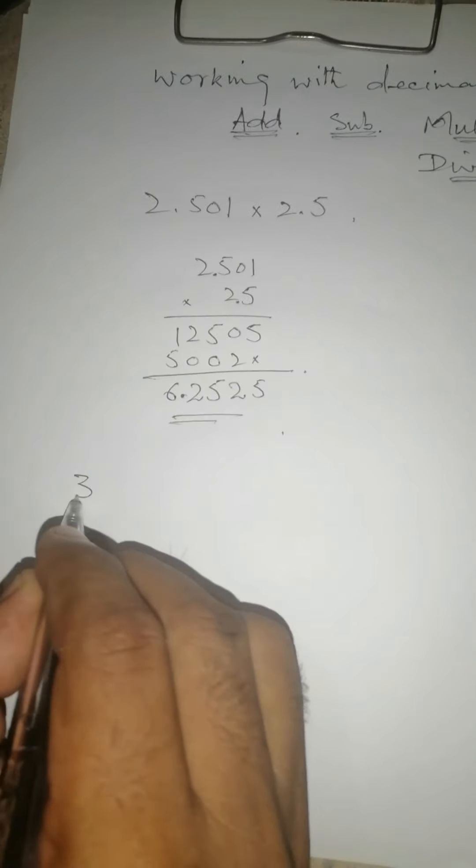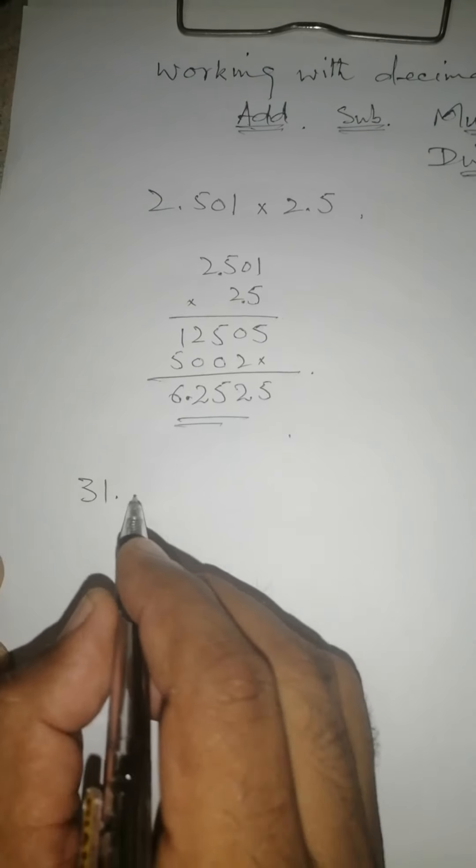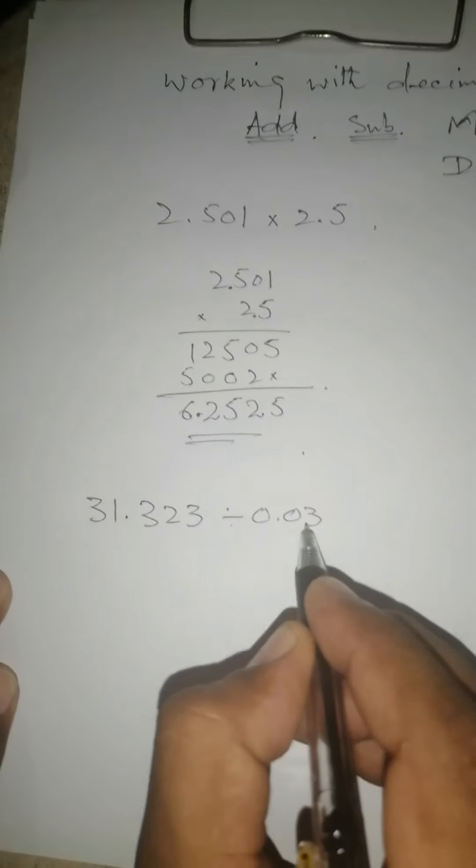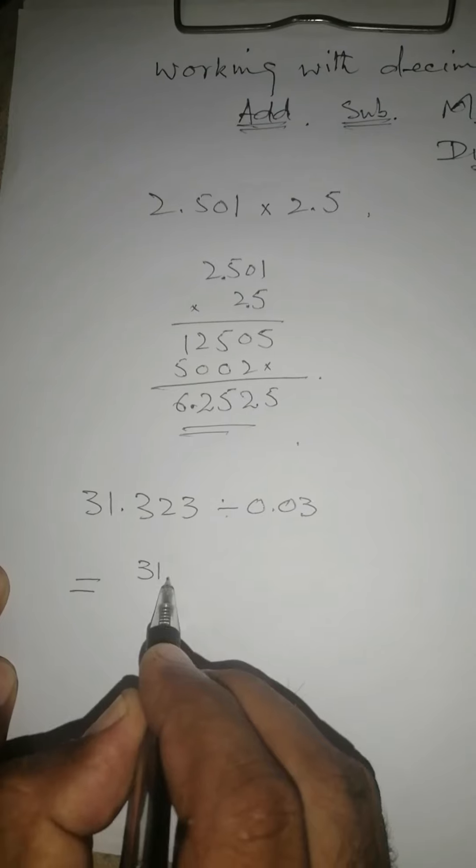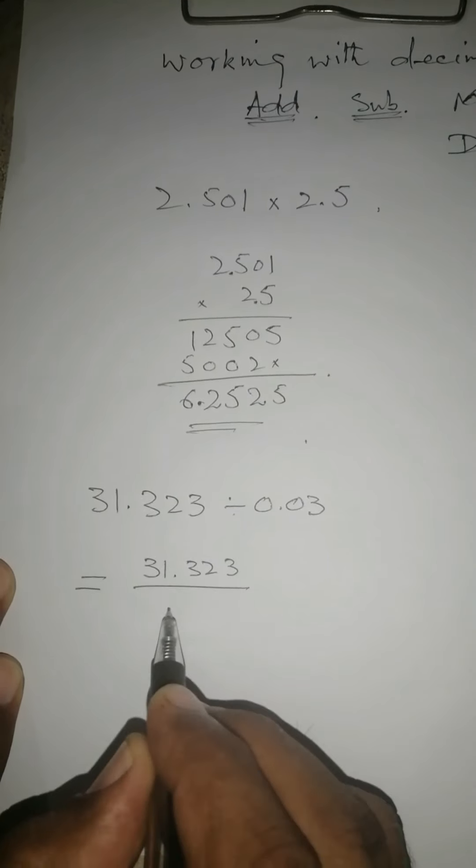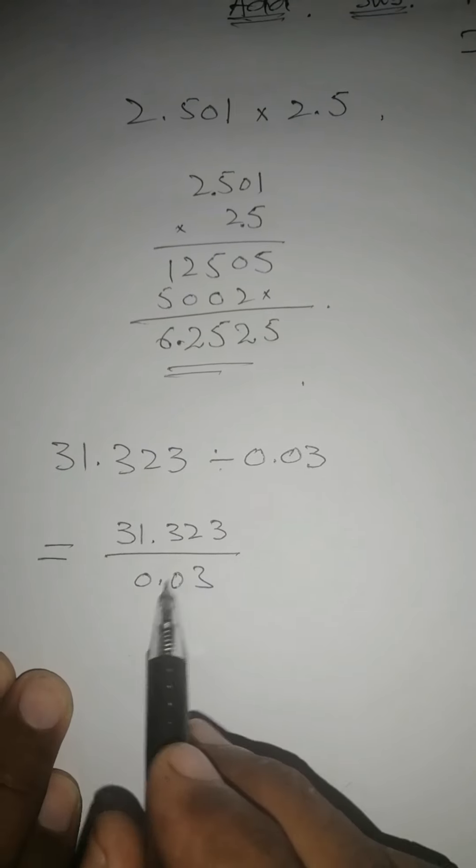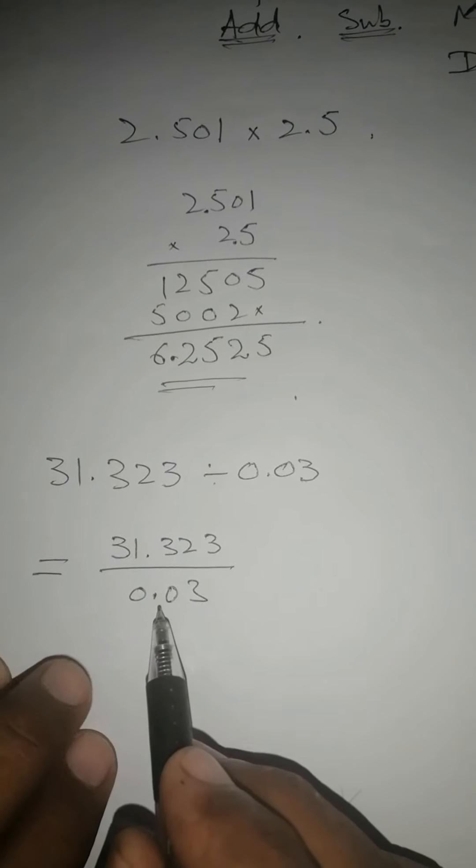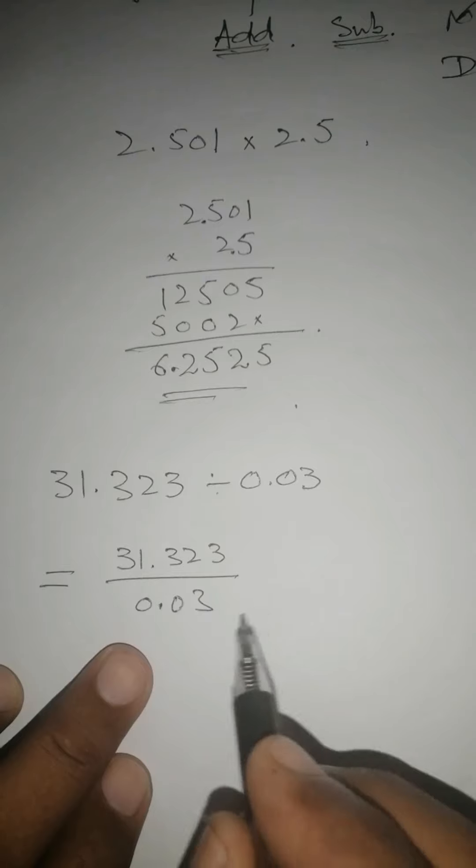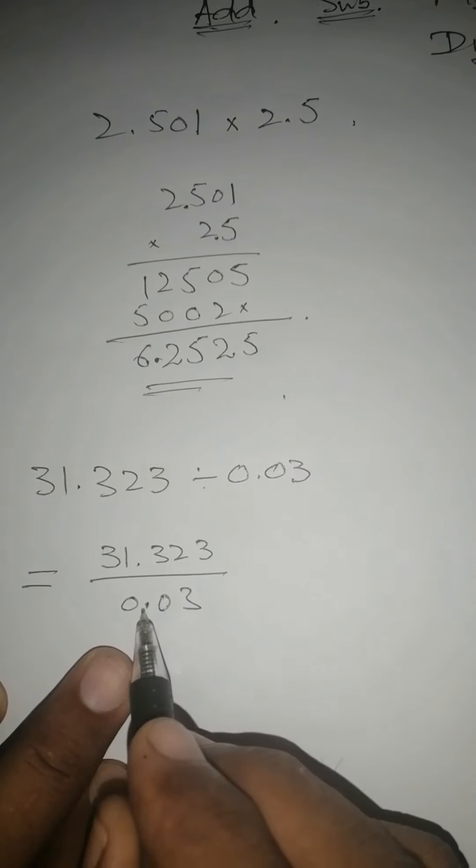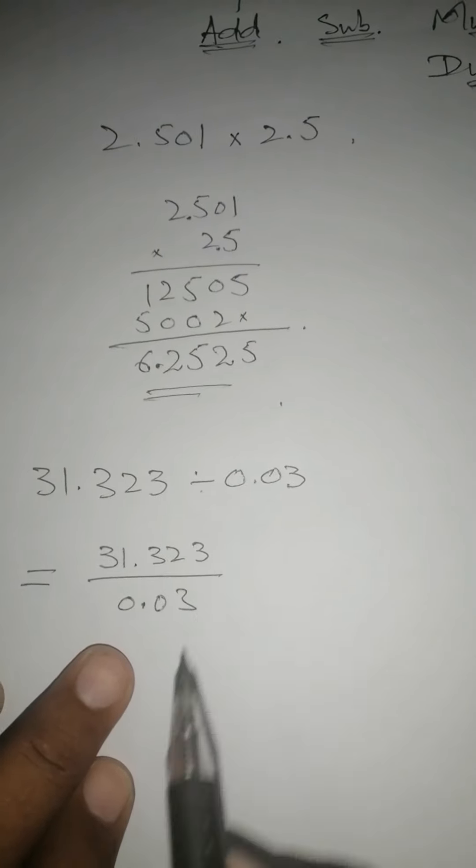Similarly, now division. Division, let me take an example. 31.323 divided by 0.03. This can be written like 31.323 divided by 0.03. We are trying to remove this decimal. This decimal ko khatam karein so that it becomes a whole number. How can we remove this? See, one, two. After two digits we have the decimal. So if we multiply this by 100, this decimal will be removed. At the same time, multiply the numerator by 100 also.